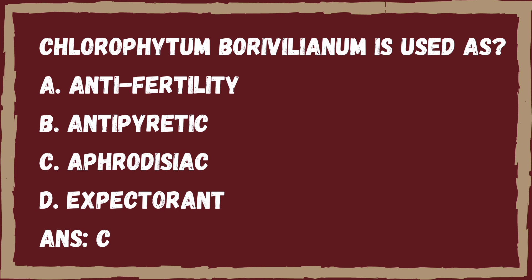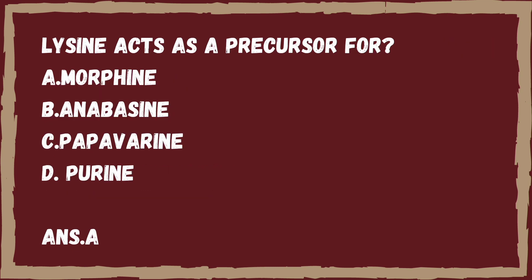Next question: lysine acts as a precursor for — Option A, morphine. Option B, anabasine. Option C, papaverine. Option D, purine. The right answer is Option A, that is morphine. Lysine acts as a precursor for morphine.